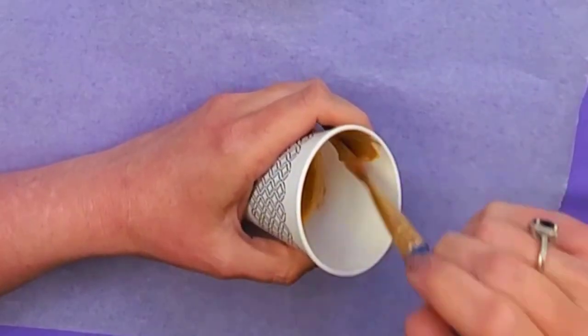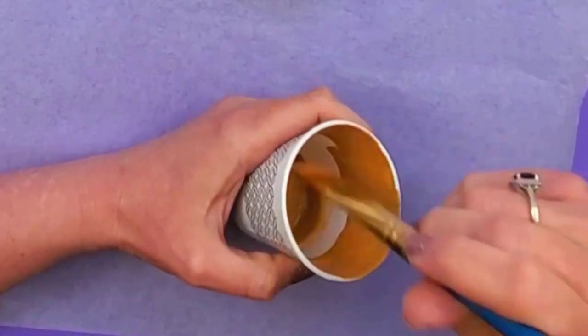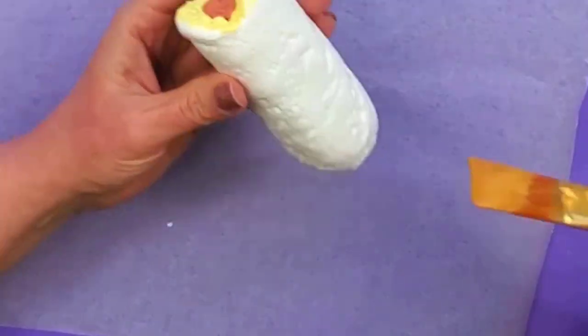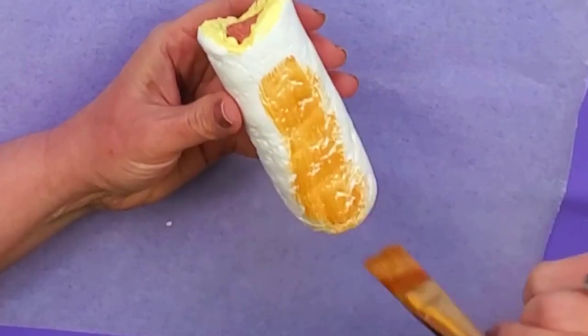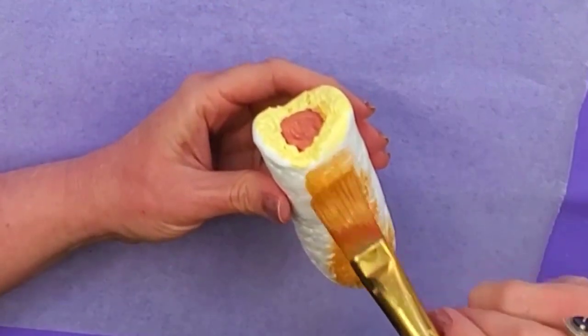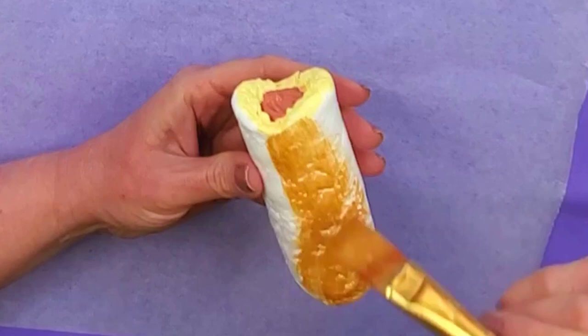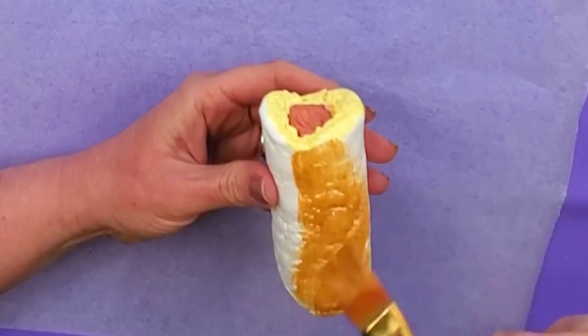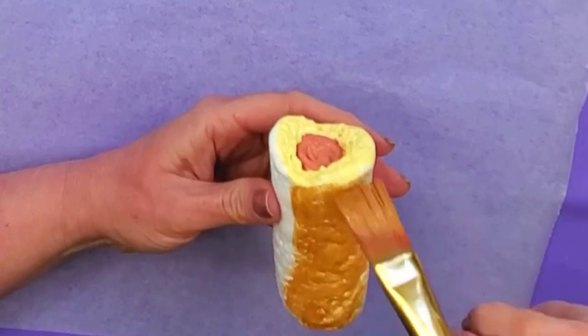So we want to dry brush this outside part, so I'm just going to get a lot of the paint off of my brush and then I'm just going to go lightly over. You want to make sure all those little crevices are filled in. Don't leave any white parts.